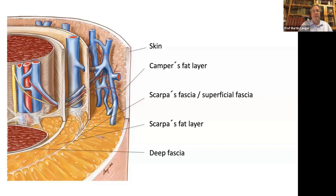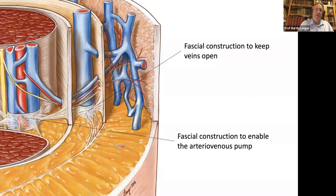Here you can see a cross-section of the lower limb with a very complex vein system. You also have the skin, the Camper's fat layer, the Scarpa's fascia, the Scarpa's fat layer, and the deep fascia. The vein system runs in different layers, but the fascia system also has the function that fascia contractions open the veins and enable the arteriovenous pump by compression through the fascia.